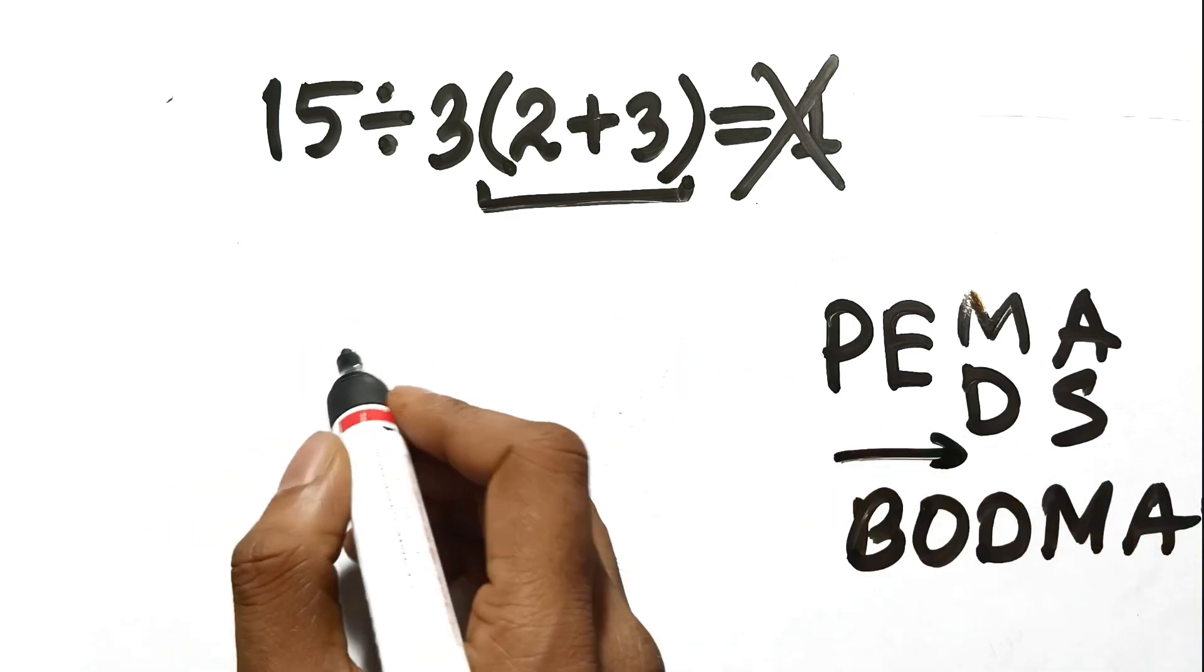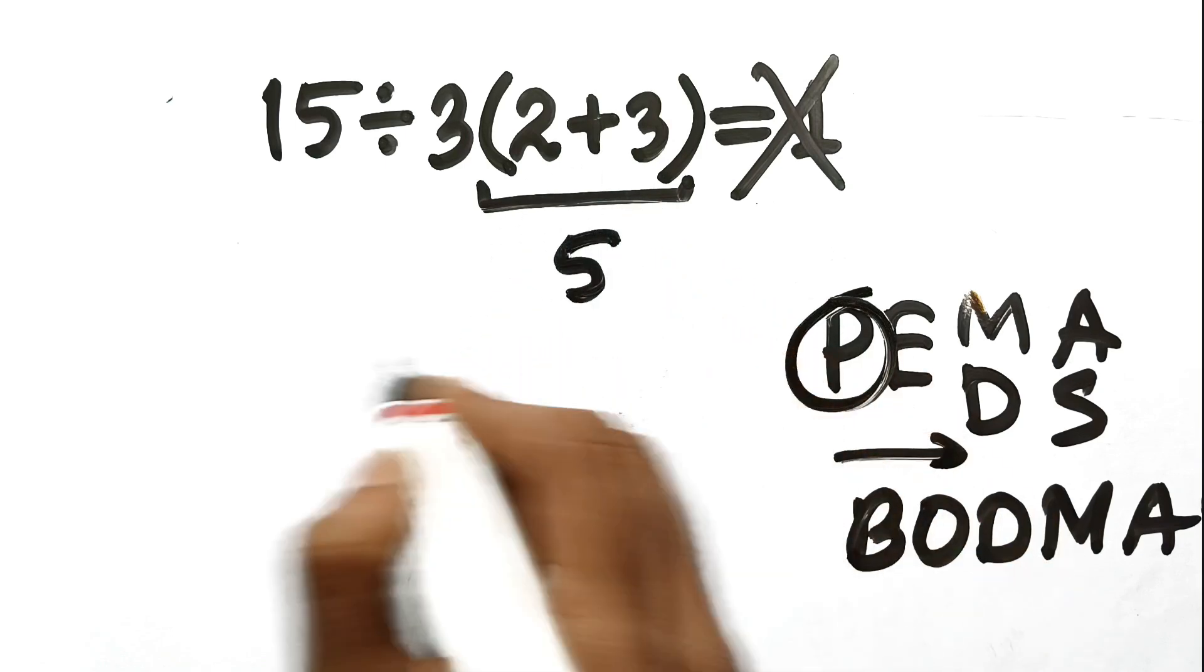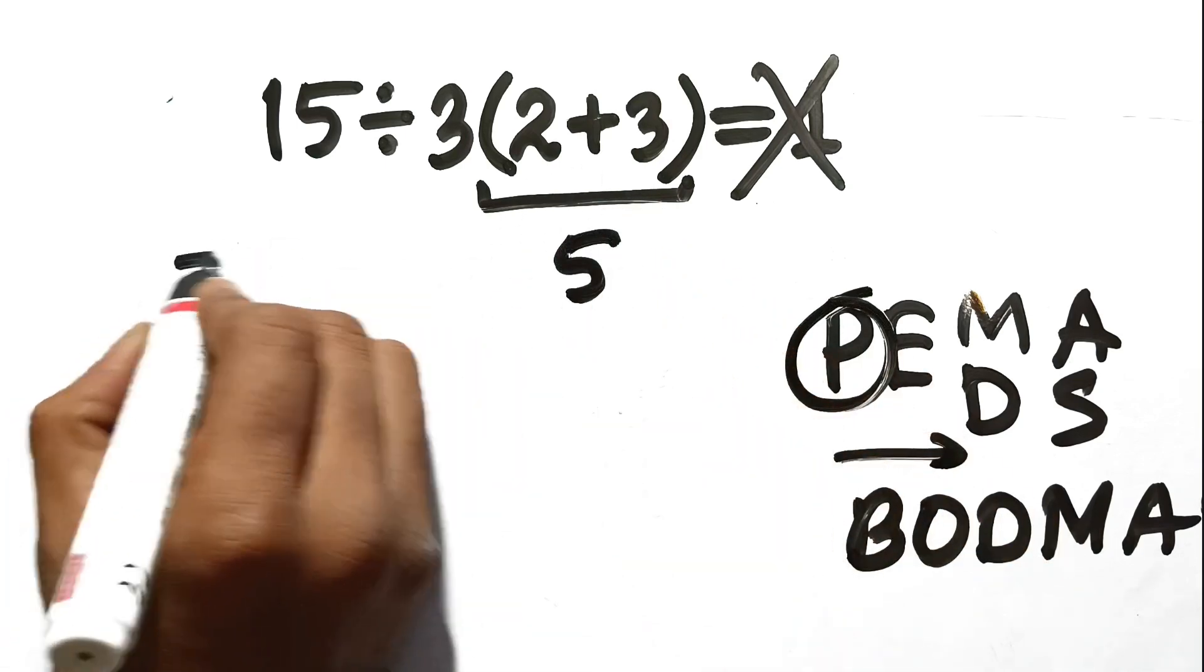Let's restart the problem properly. First, we do the parentheses. 2 plus 3 is 5. That is undeniable. Now look at the expression again.